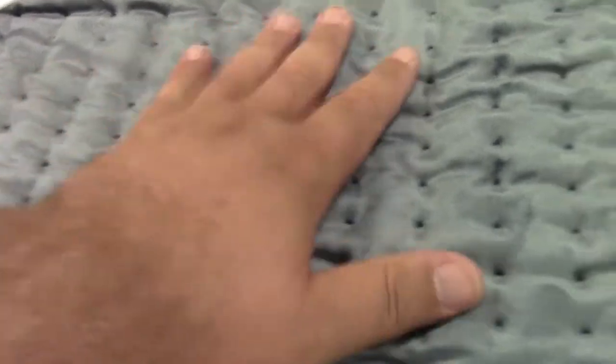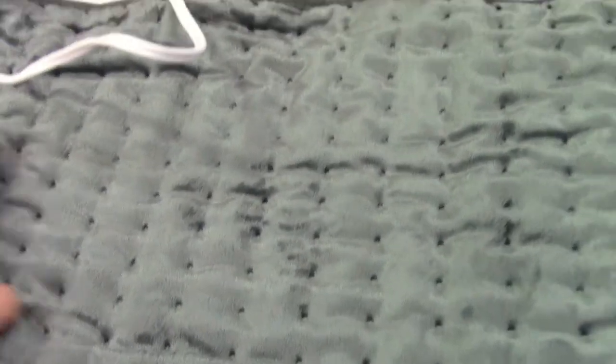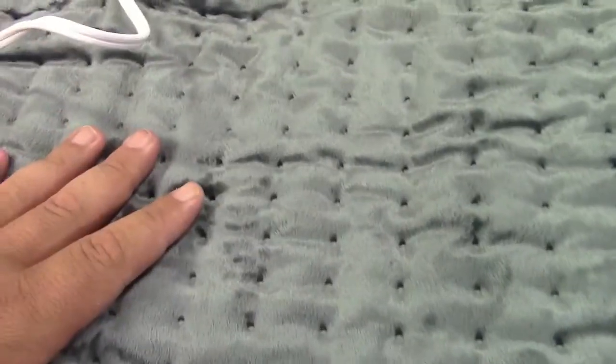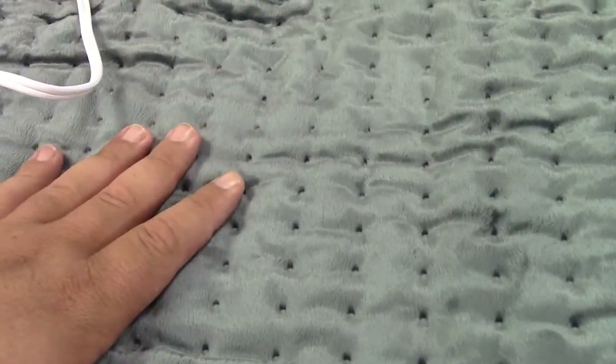Another nice thing about this heating pad is it can be used moist or dry. Dry obviously out of the box it will be. Moist, you just spritz it with a little water sprayer bottle or something like that. And then you can have moist heat, and of course it's going to dry naturally which would be aided by the heat it itself produces.